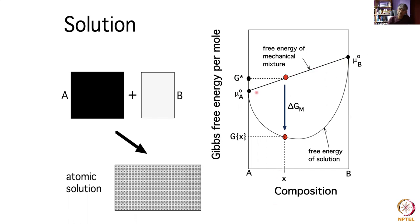At this stage the A atoms haven't perceived the presence of the B atoms. When we mix them into an intimate solution there is a reduction in free energy given by delta G_M, and that reduction depends on the configurational entropy of mixing and various other terms. Let's assume for the moment this is an ideal solution, so we can work out the configurational entropy as normal.